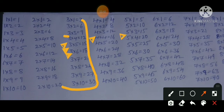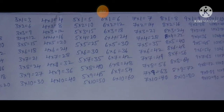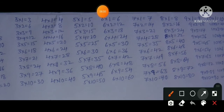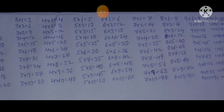Continuing the 3 times table: 3×6=18 and 6×3=18; 3×7=21 and 7×3=21; 3×8=24 and 8×3=24; 3×9=27 and 9×3=27; 3×10=30 and 10×3=30. Okay, next.